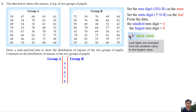Leaf digits are arranged from the smallest value to the largest value. If we do this question on paper, we need to rearrange data from the smallest value to the largest value. However, since I'm doing it in PowerPoint, I'll do it in another way.